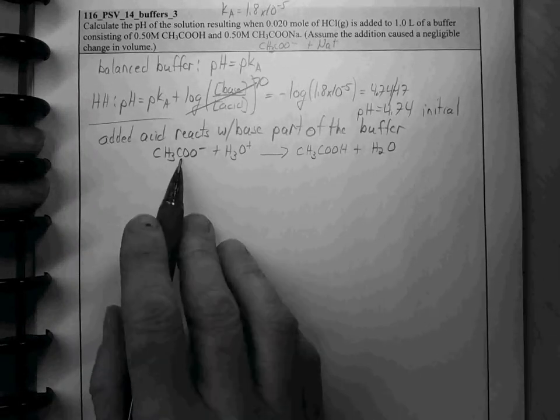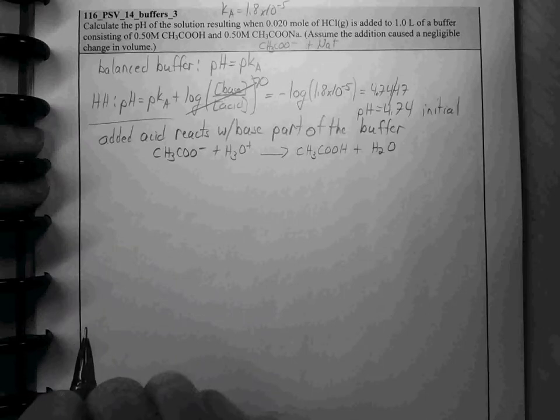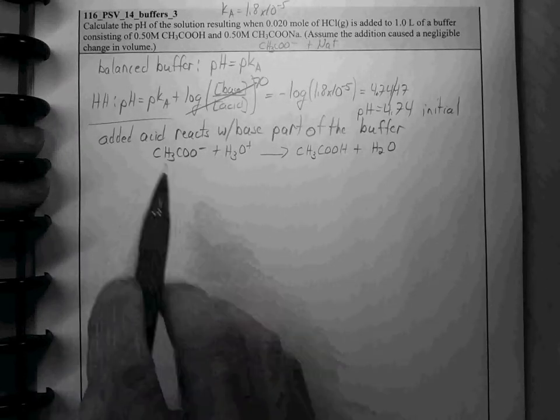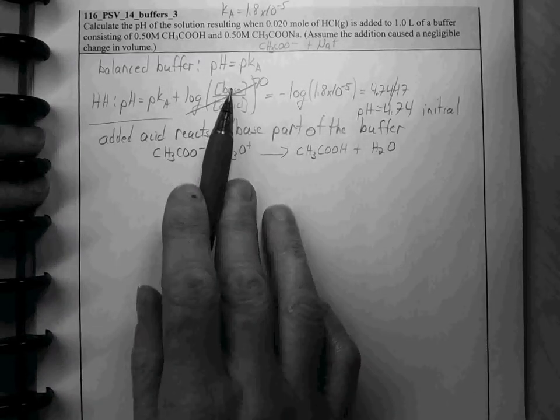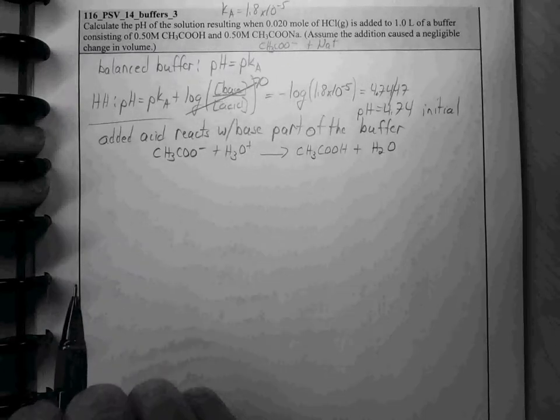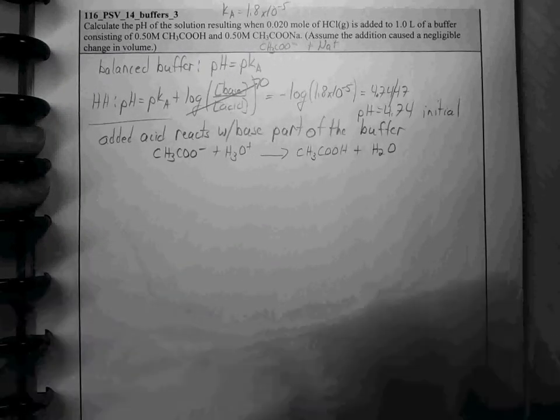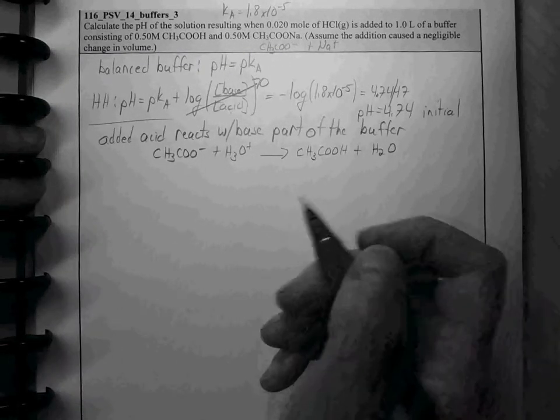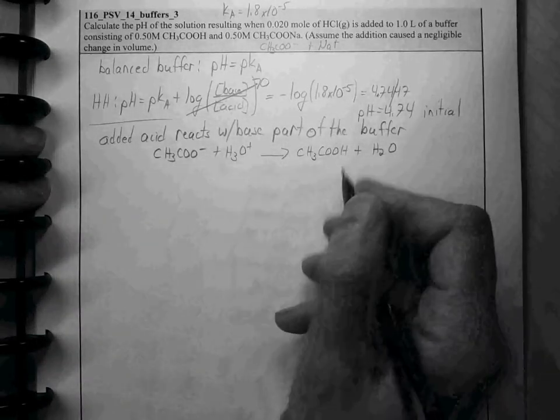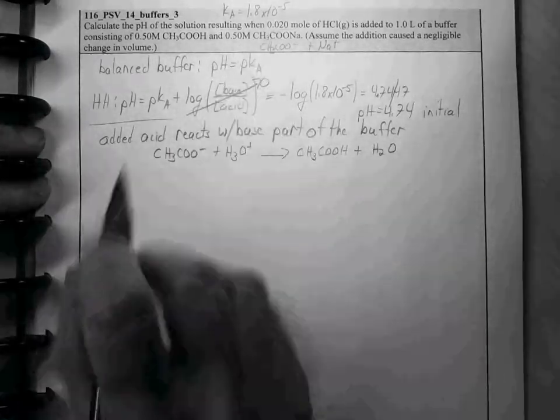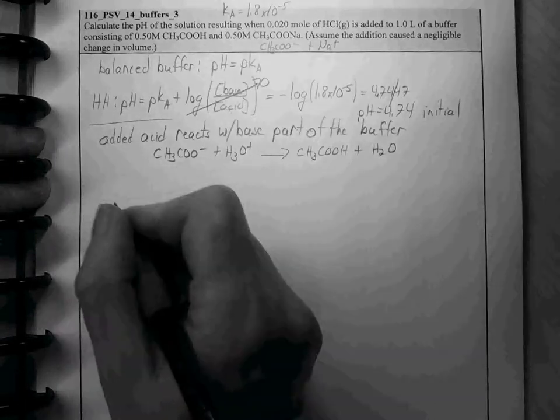So, some of our conjugate base has been converted to our acid. What happens is the ratio of the base to the acid is shifted a little bit by this addition of the strong acid. So, to find out how much, we can calculate the initial moles of each.